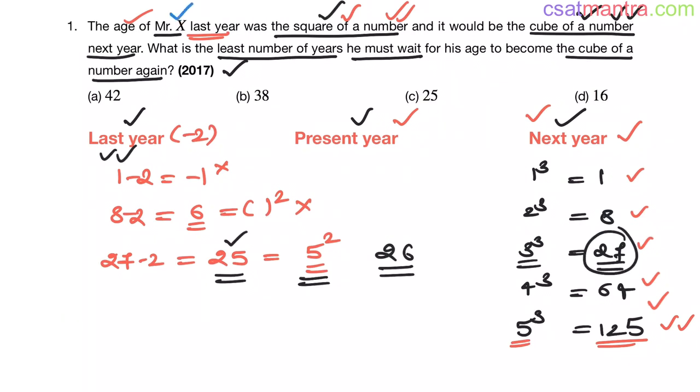Now, how many years Mr. X has to wait for his age to become the cube of a number again? It became the cube here. Now it has to become the cube again. So the next cube is 4 cube, that is 64. It has to become 64. So how many years should he wait? That is 64 minus 26, that equals 38.